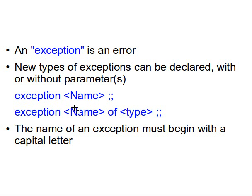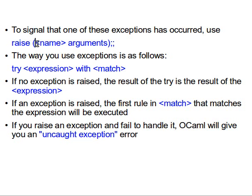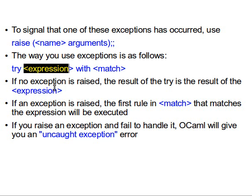After declaring our own exception, or using one of the existing ones in OCaml, whenever we define a function that raises an exception, we use 'raise' followed by the exception name and its arguments if needed. To handle it when calling that function, we use 'try...with' — similar to try-catch in Java — where 'try expression' contains our logic and 'with' specifies what to do if that exception is raised.